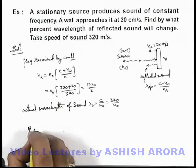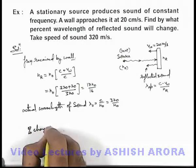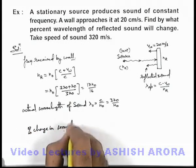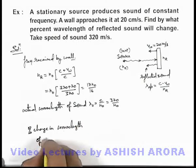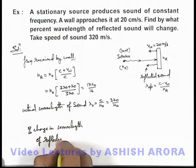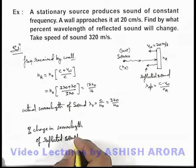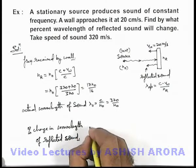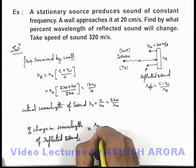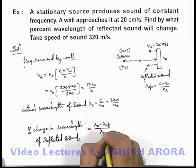Now percentage change in wavelength of reflected sound can be given as: this percentage change is equal to (λ₀ - λ apparent)/λ₀.